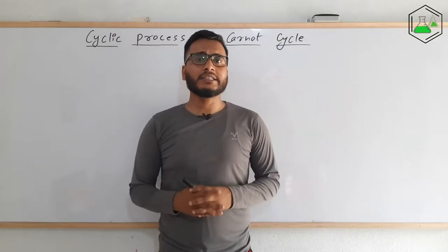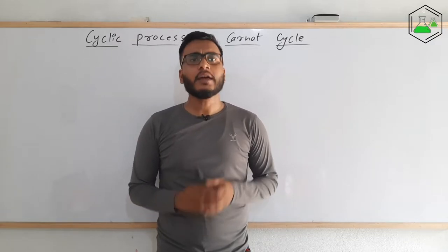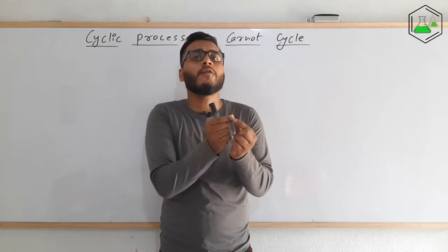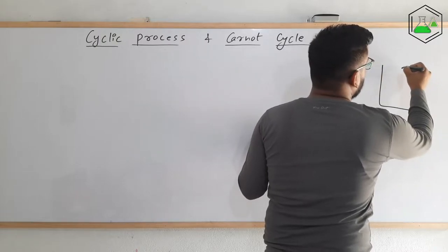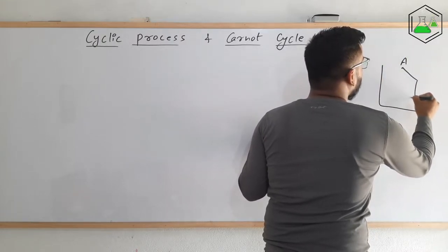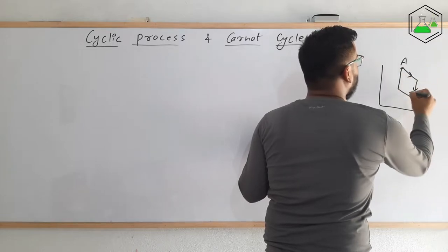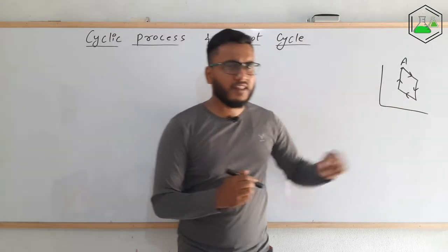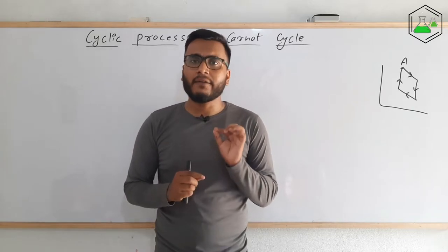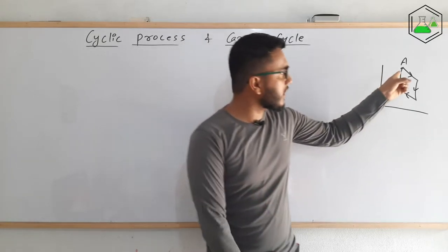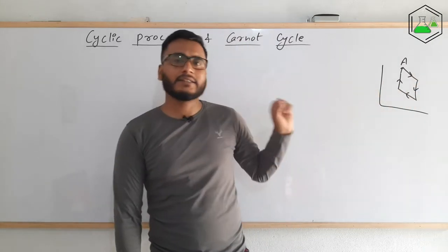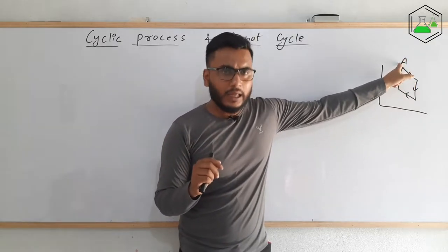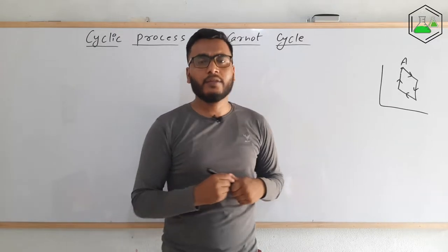First of all we need to understand about the cyclic process. Cyclic process is a kind of process in which the system is brought back to its initial state after a series of changes. The graph of cyclic process starts from point A, goes through a series of changes, and ends on point A again. In mathematics you might have heard about the term perimeter, in which we start from a point and end on the same point — it is just like that.